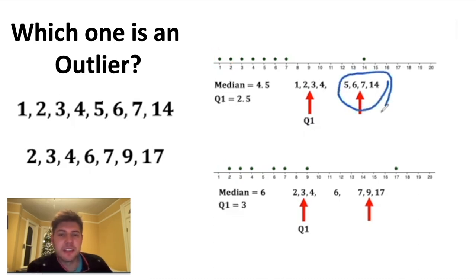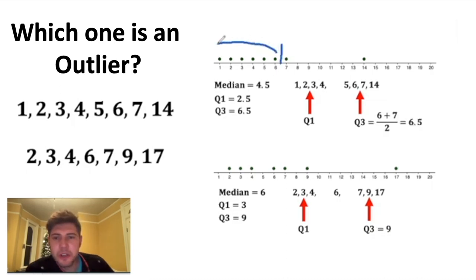Next, if we take the median of the second part of the data, we call that the third quartile or Q3. At 6.5, three quarters of the data is to the left of it. At nine, roughly three quarters of the data is to the left of it.